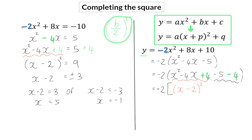Then, we are left with minus 5 minus 4, which is minus 9. The final step is to multiply the minus 2 back into the bracket, and that will give us minus 2 multiplied by the x minus 2 squared and plus 18.